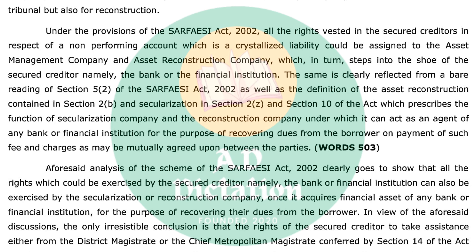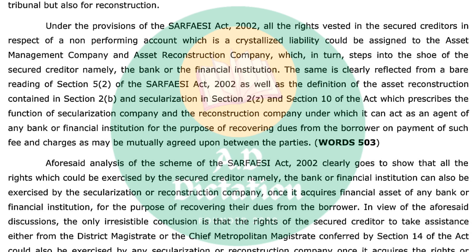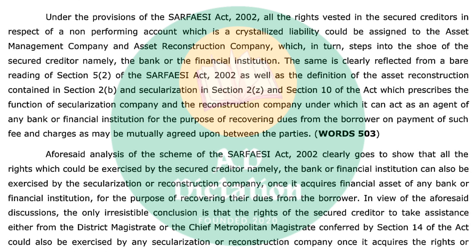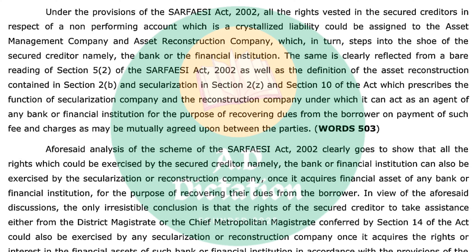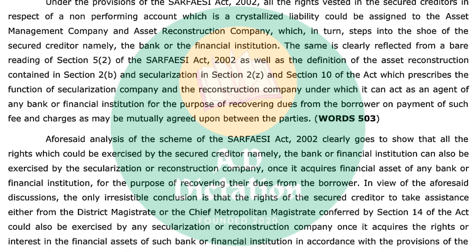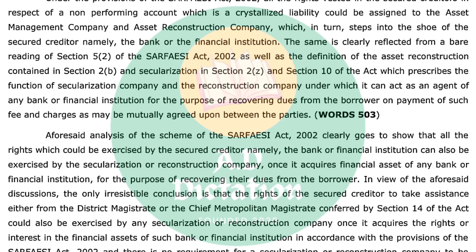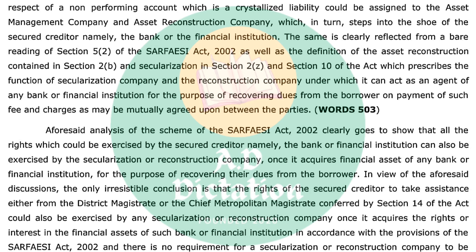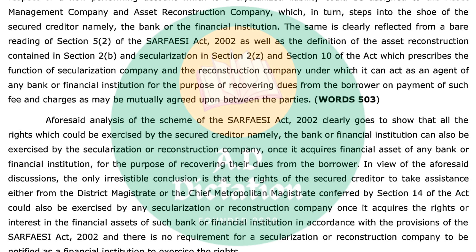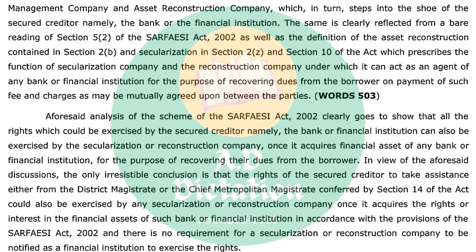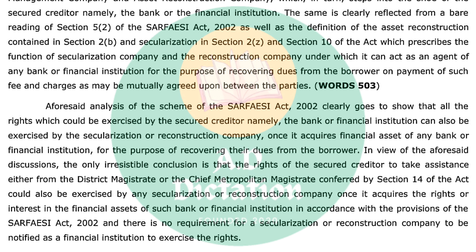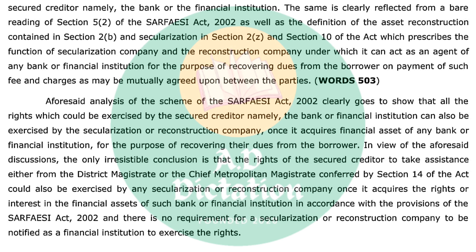The aforesaid analysis of the scheme of the SARFAESI Act 2002 clearly goes to show that all the rights which could be exercised by the secured creditor, namely the bank or financial institution, can also be exercised by the securitization or reconstruction company once it acquires the financial assets of any bank or financial institution for the purpose of recovering their dues from the borrower. In view of the aforesaid discussions, the only irresistible conclusion is that the rights of the secured creditor to take assistance either from the District Magistrate or the Chief Metropolitan Magistrate, conferred by Section 14 of the Act.